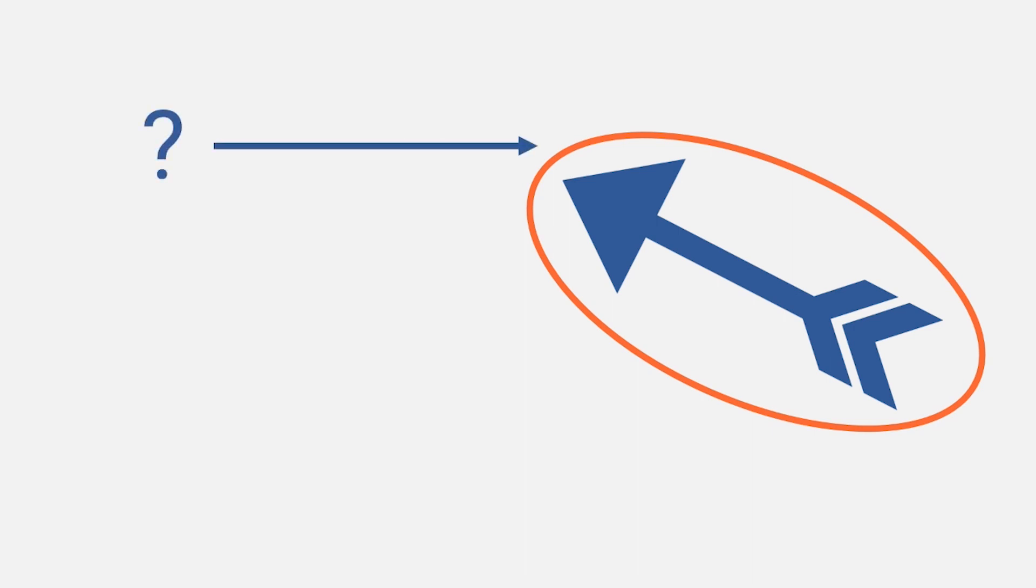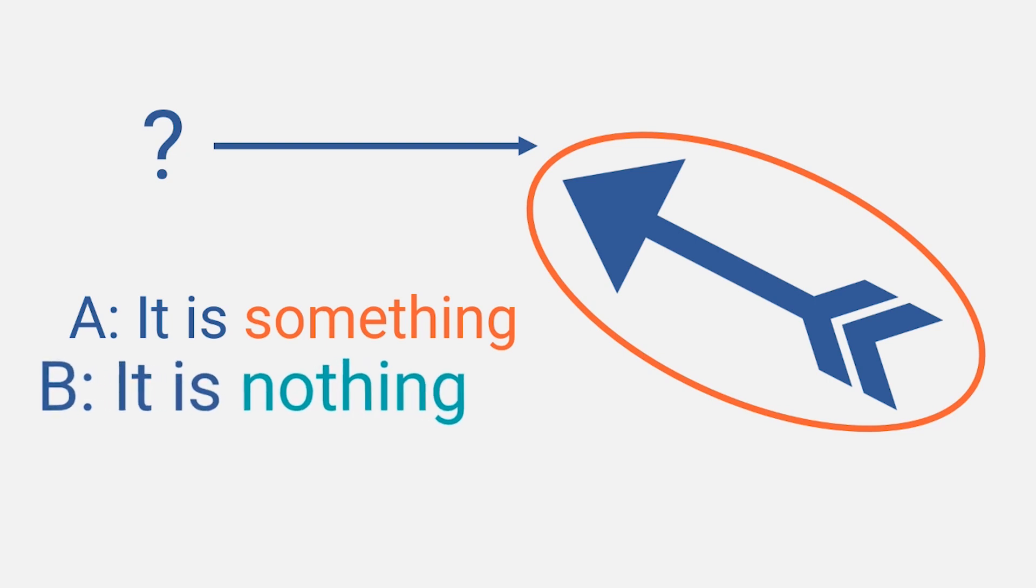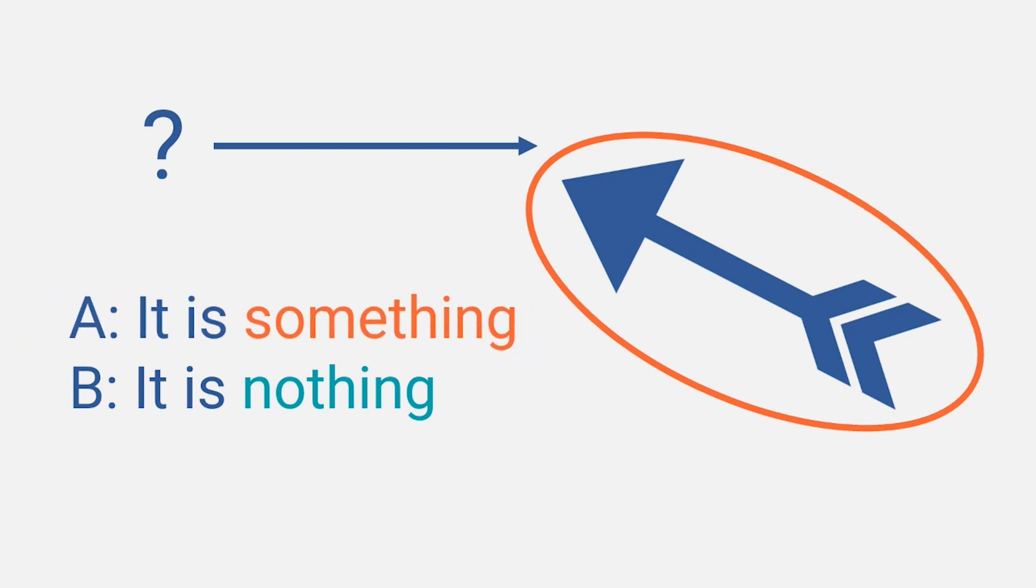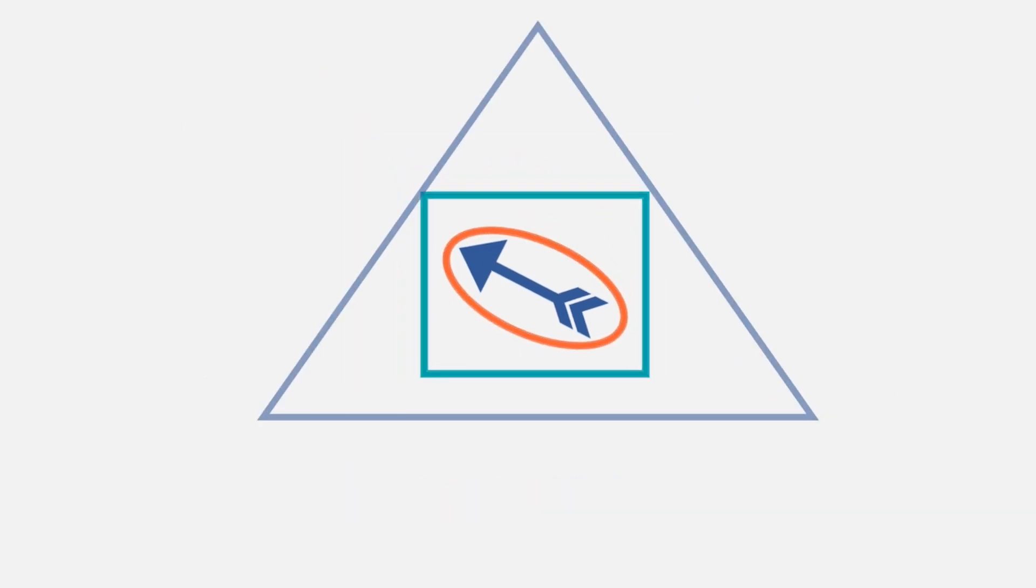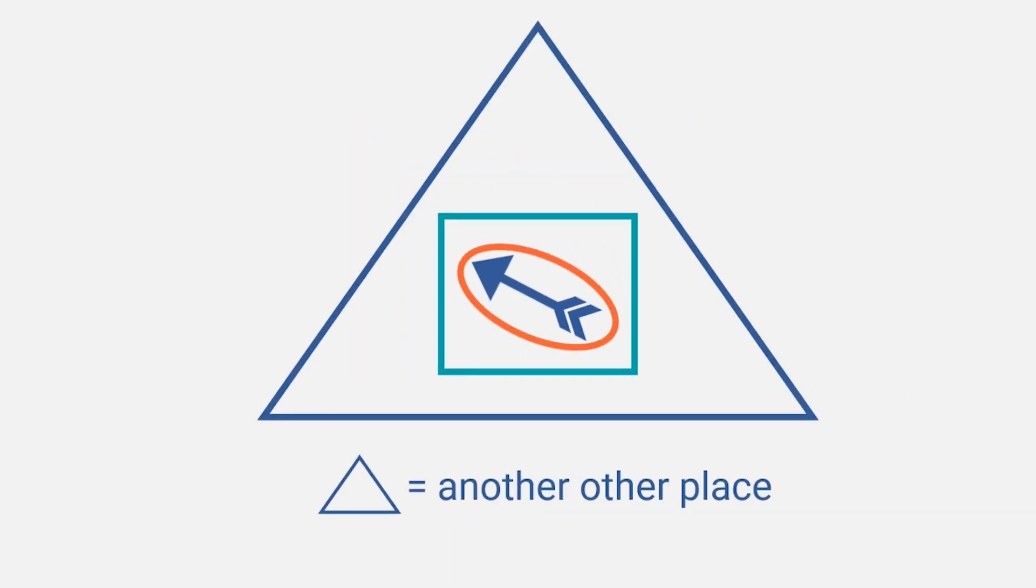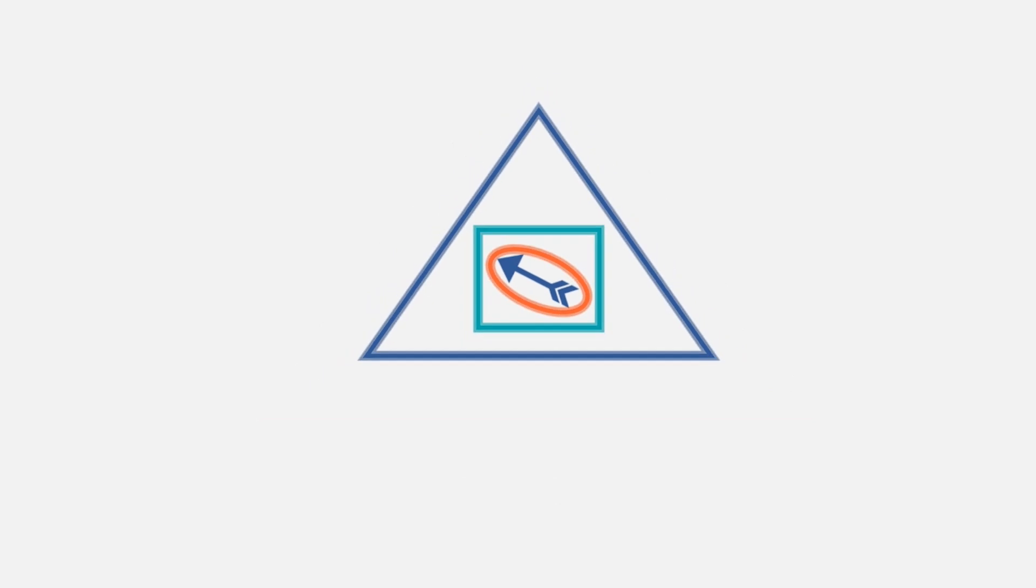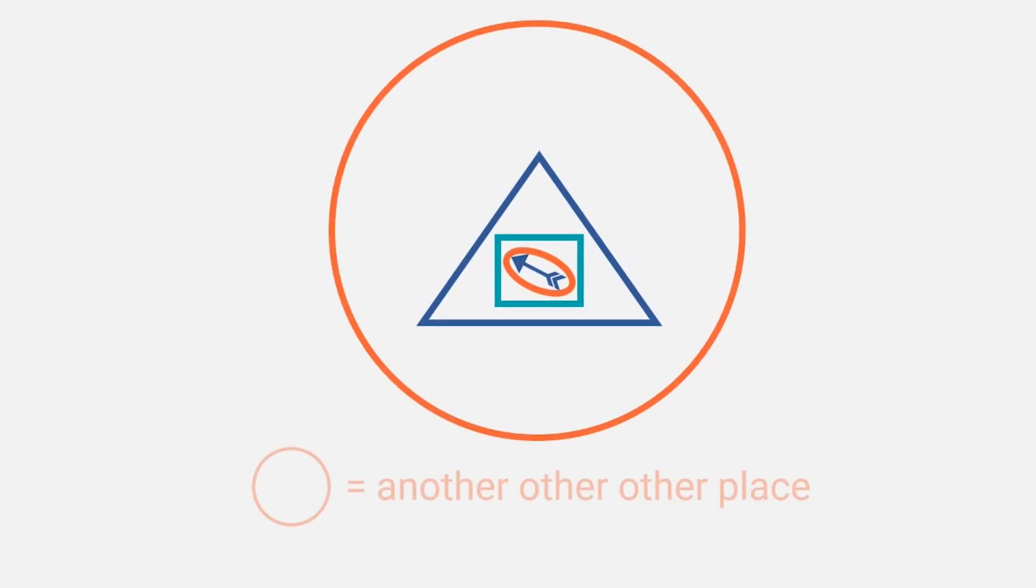Is that place something or nothing? If it is nothing, then how can the thing be in it? If that place is something, then that something has to be in a place too, right? And then, that new place also has to be something as well, which implies that it is in a place again. And that place has to be in another place, until you have infinitely many places.